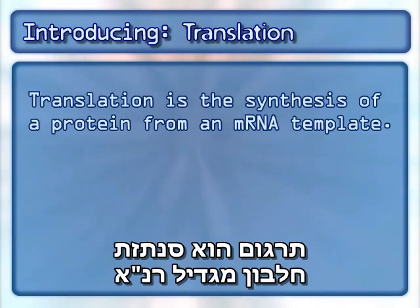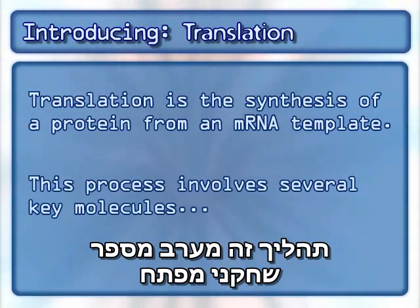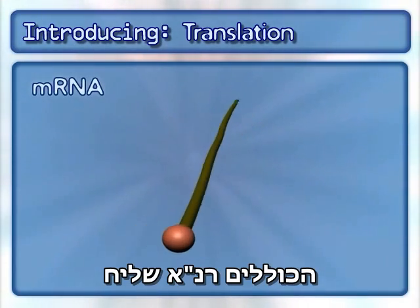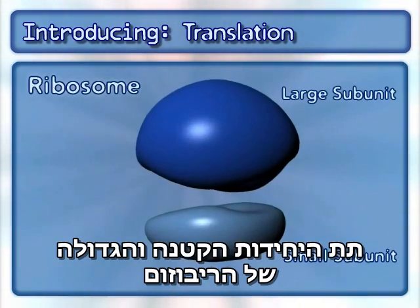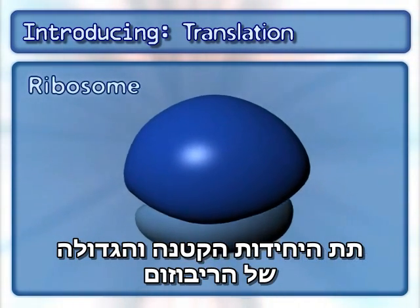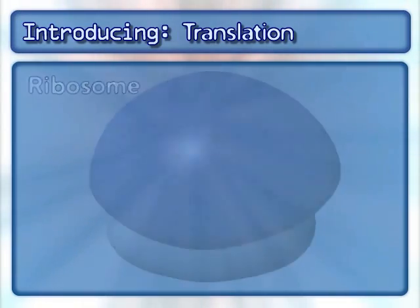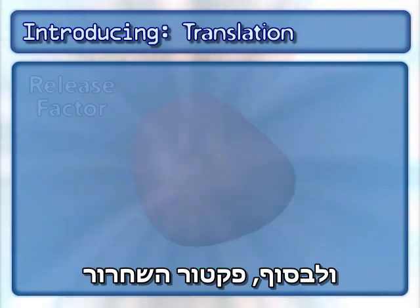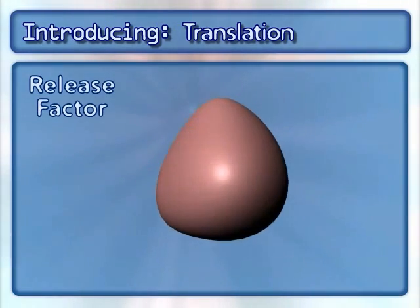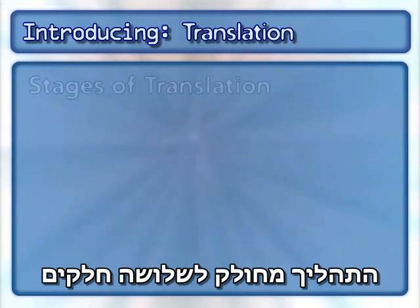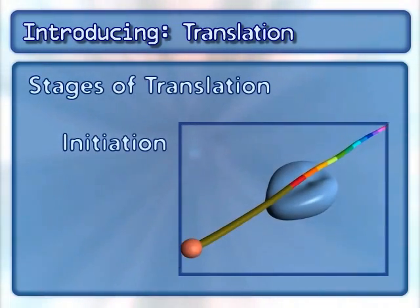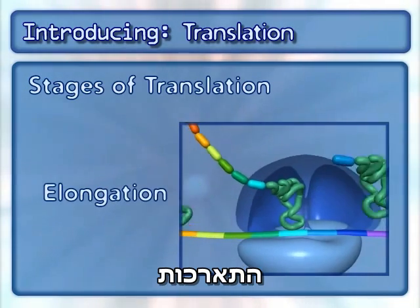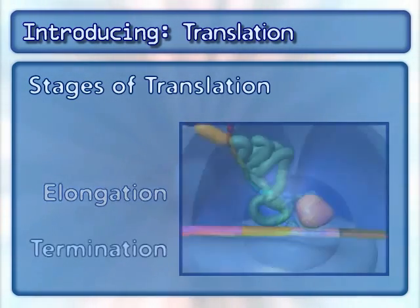Translation is the synthesis of a protein from an mRNA template. This process involves several key molecules, including mRNA, the small and large subunits of the ribosome, tRNA, and the release factor. The process is broken into three stages: initiation, elongation, and termination.